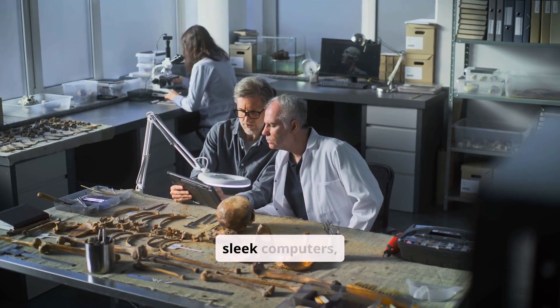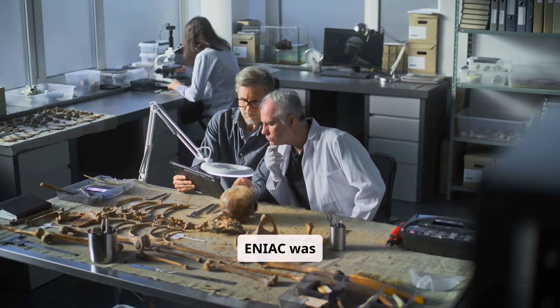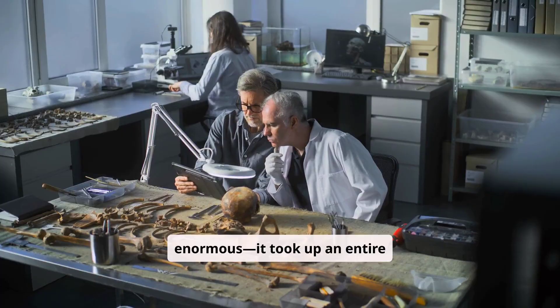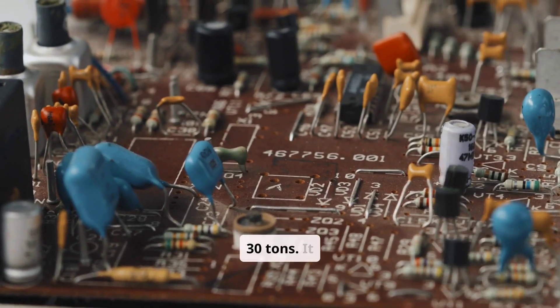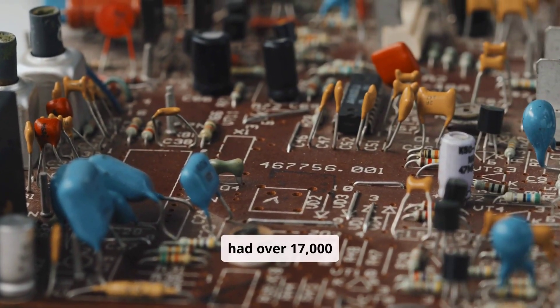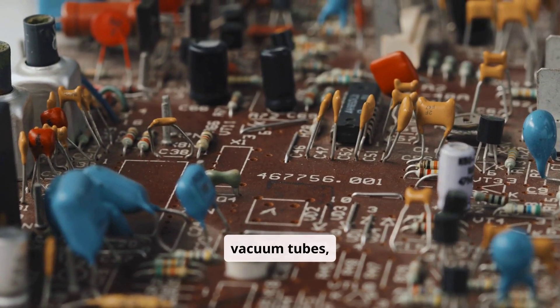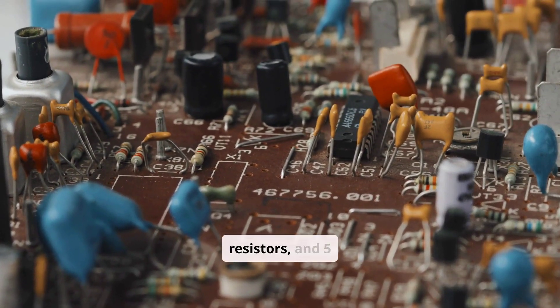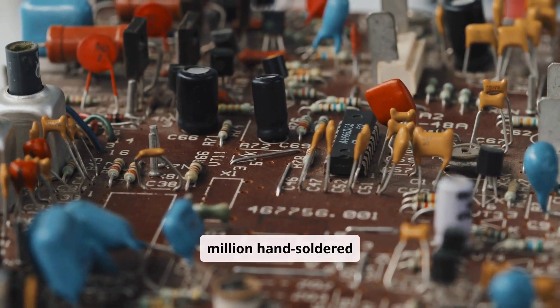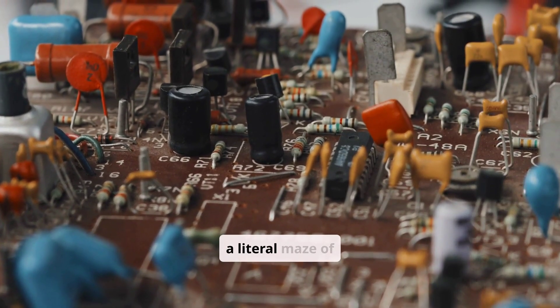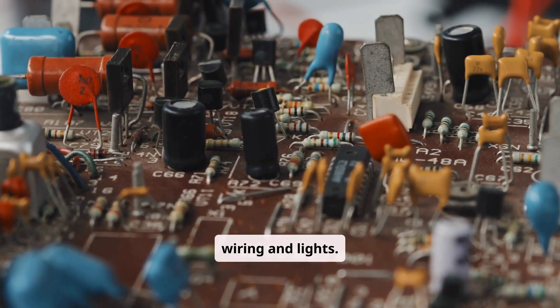Unlike today's sleek computers, ENIAC was enormous. It took up an entire room and weighed 30 tonnes. It had over 17,000 vacuum tubes, 70,000 resistors, and 5 million hand-soldered joints, making it a literal maze of wiring and lights.